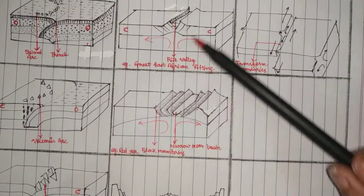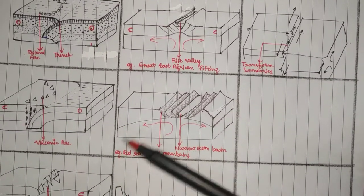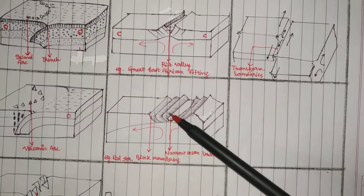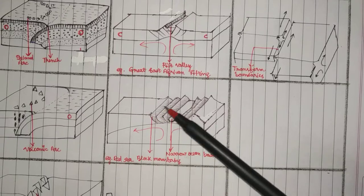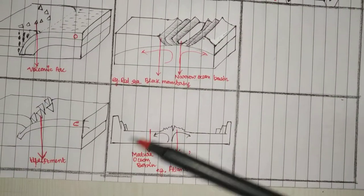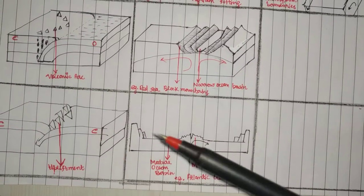Narrow ocean basin is stage two, for example the Red Sea currently, where there are block mountains found. The third stage is the formation of mature ocean basin and the mid-oceanic ridge, for example the Atlantic Ocean.